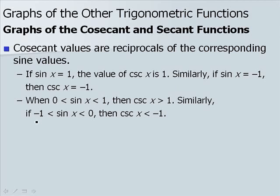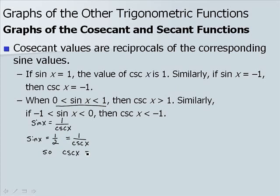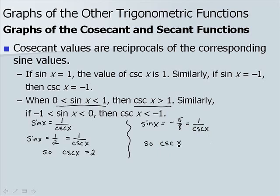Let's look at a couple of examples. Since sine of x equals 1 over cosecant of x, if we let sine of x equal 1/2 — a value between 0 and 1 — then 1/2 equals 1 over cosecant of x, giving cosecant of x equal to 2, which is greater than 1. Now for our second situation: if sine of x equals negative 5/8, then negative 5/8 equals 1 over cosecant of x, giving cosecant of x equal to negative 8/5, which is smaller than negative 1.